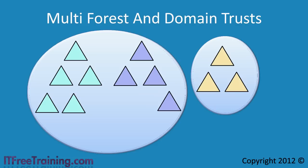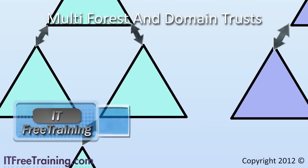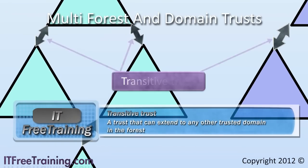To make administration easy, Active Directory automatically creates a two-way trust relationship between parent and child domains. This trust relationship is called a transitive trust. A transitive trust simply means: I trust you and any other domains that you decide to trust, or to quote a familiar saying, any friend of yours is a friend of mine.